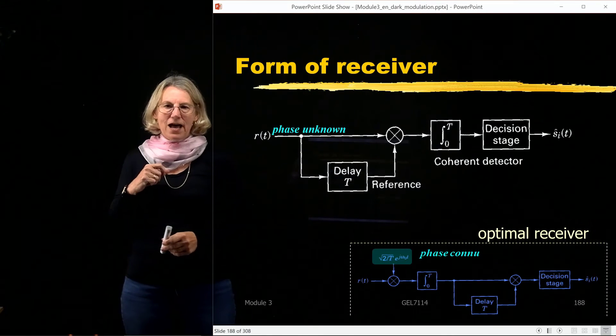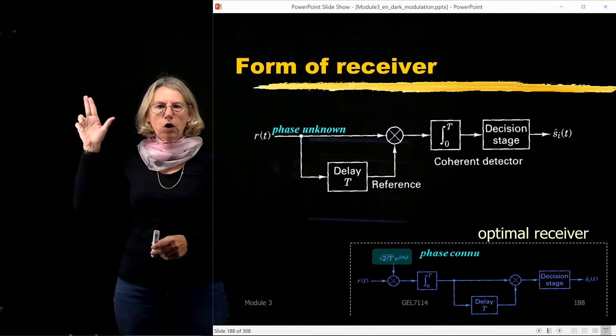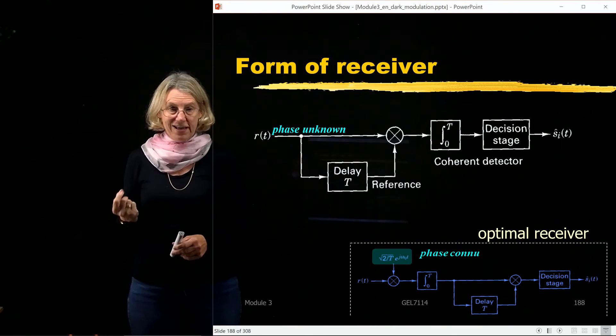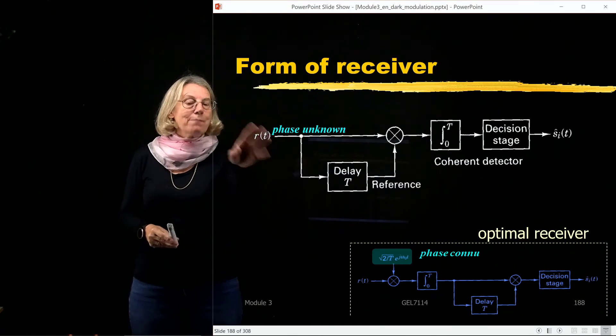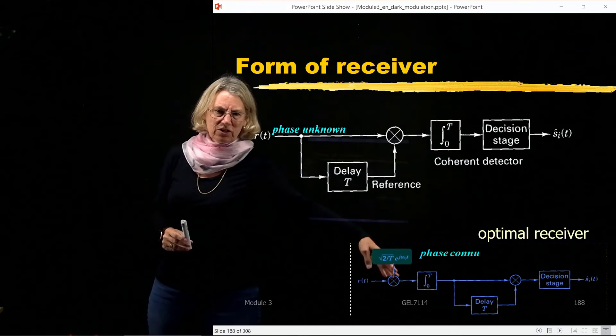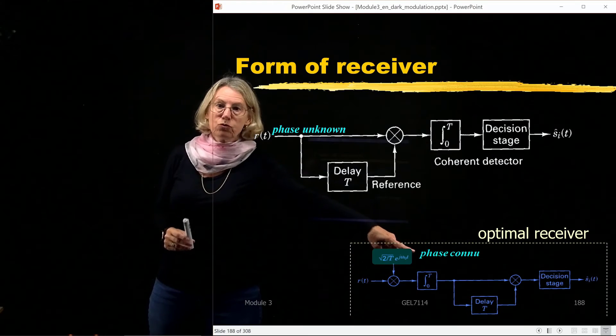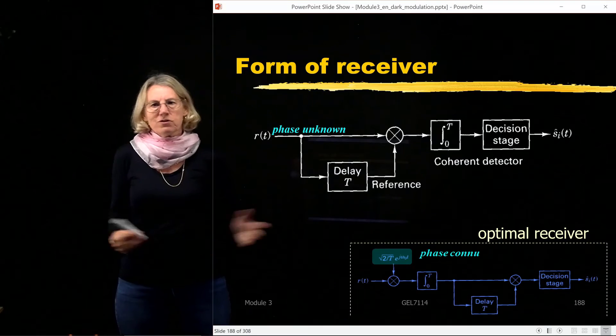Now if I use this idea about let's code in the difference of phase instead of in the absolute phase, this is not the optimal receiver. The optimal receiver would look something like this. I would do a correlation with the true phase, and then I would do this delay.